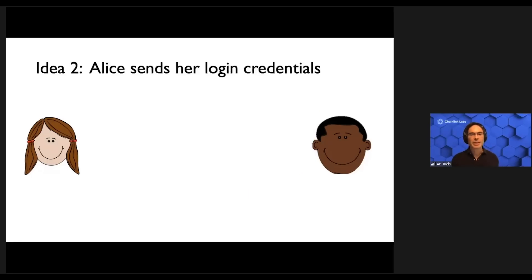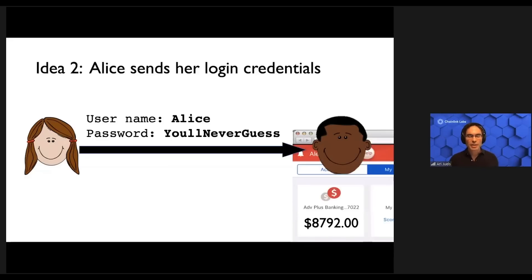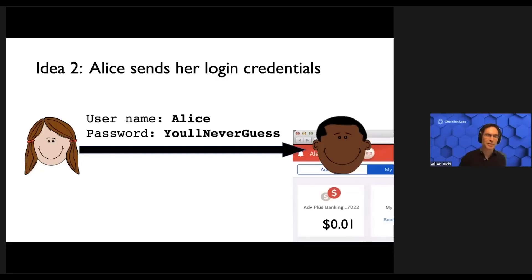Another possibility is that Alice sends her login credentials — her username and password — to Bob. Bob then logs into her account and checks her account balance. Now, this works, but it's a bad habit for Alice to get into if she wants to keep her bank account balance above $5,000. So that's not quite going to work either.